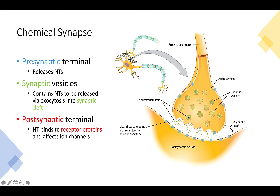An electrical signal passes down the axon and then releases neurotransmitters into the synaptic cleft. If the reaction is strong enough, it creates another action potential in the postsynaptic neuron, which then sends its own action potential onward. That is the basic premise of a chemical synapse.